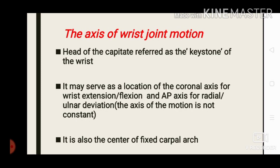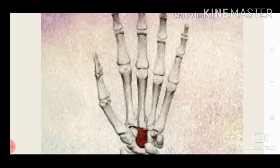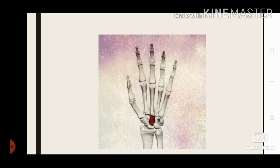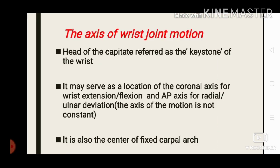Next, we move to the axis of wrist joint motion. The head of the capitate is referred to as the keystone of the wrist. It may serve as the location of the coronal axis for wrist extension and flexion, and the anterior-posterior axis for radial and ulnar deviation. The wrist is a biaxial joint with two degrees of freedom, and the axes of these motions are situated in the capitate.